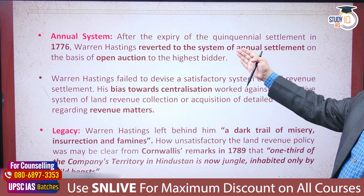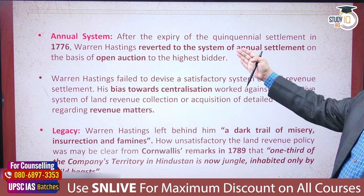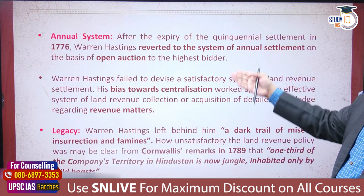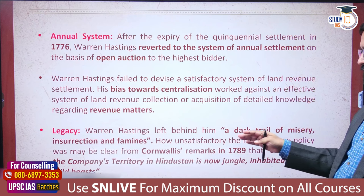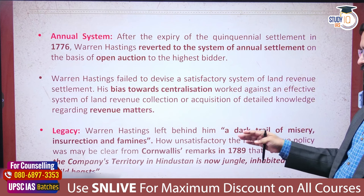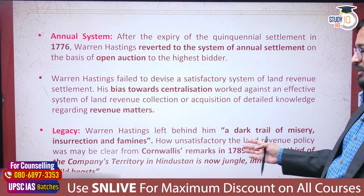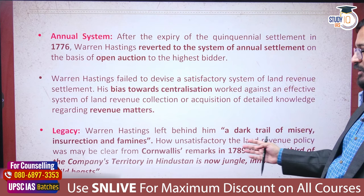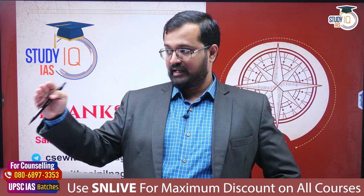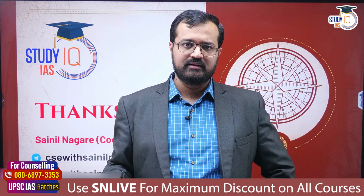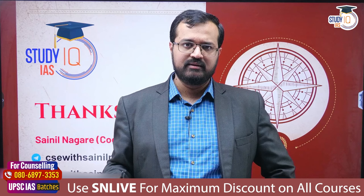Because of all this, the entire system collapsed — the revenue that should have come in was not being filled at all. Warren Hastings ended the Ijaradari system around 1776-77 and reverted to an annual settlement: again the highest bidder would get the land, but now only for one year, making long-term extortion more difficult. Yet this too largely failed, and by 1789-90 the Company's revenue administration was on the verge of collapse.